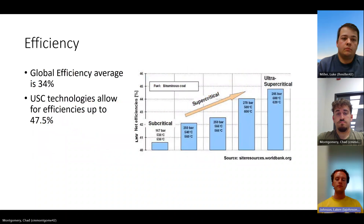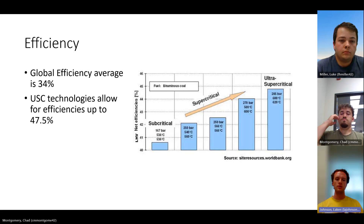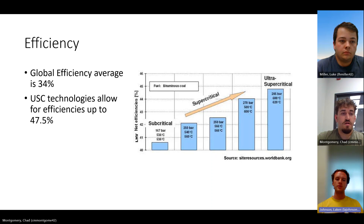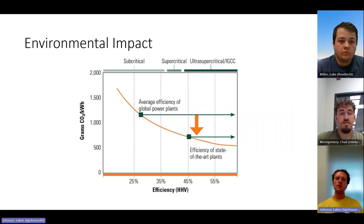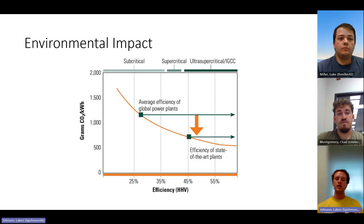This graph illustrates the efficiencies from subcritical up through ultra supercritical. The global average efficiency is about 34 percent, but you can hit the upper threshold of 47.5 percent with ultra supercritical plants. The second graph illustrates the environmental impact — as you move from subcritical to ultra supercritical, the increased efficiency directly reduces grams of CO2 per kilowatt hour.